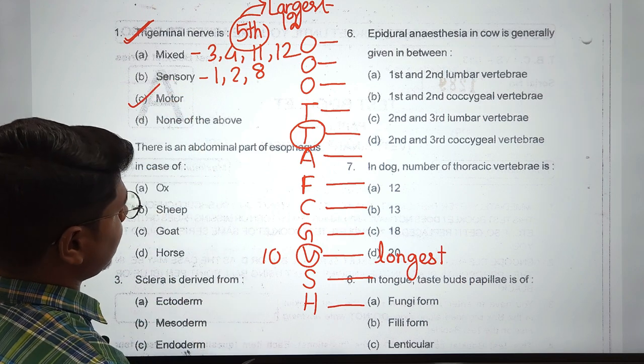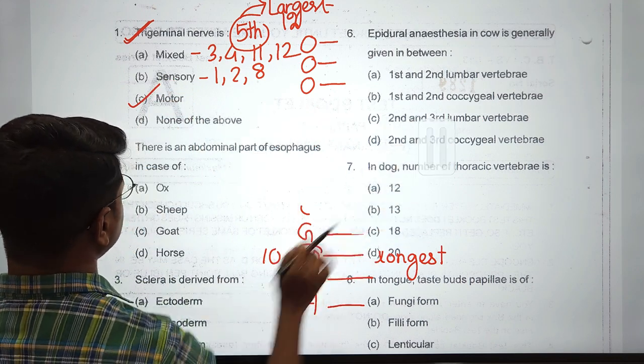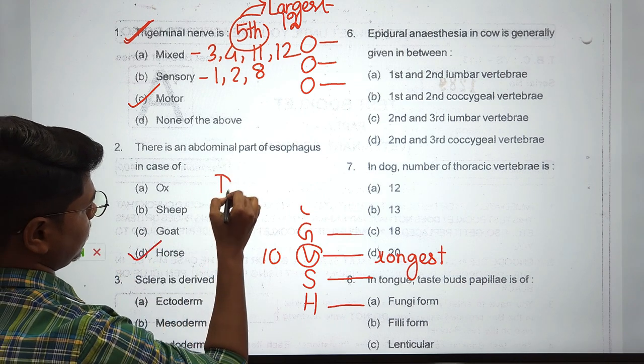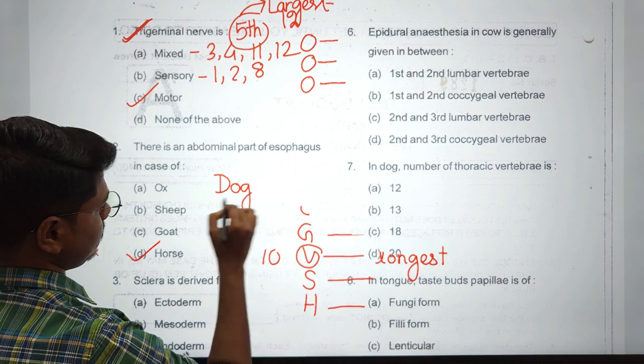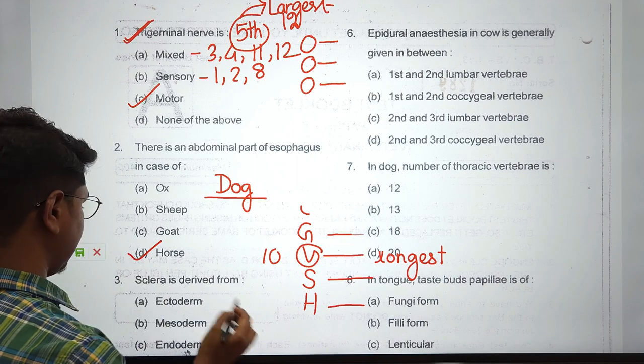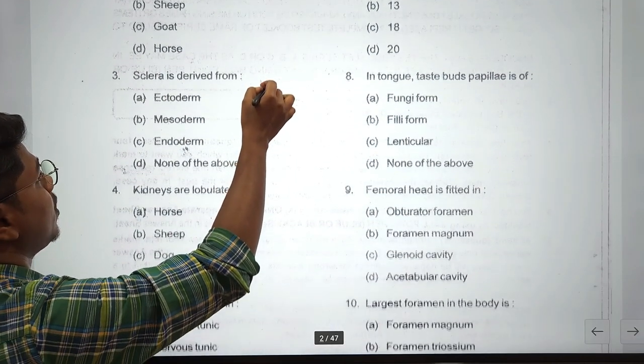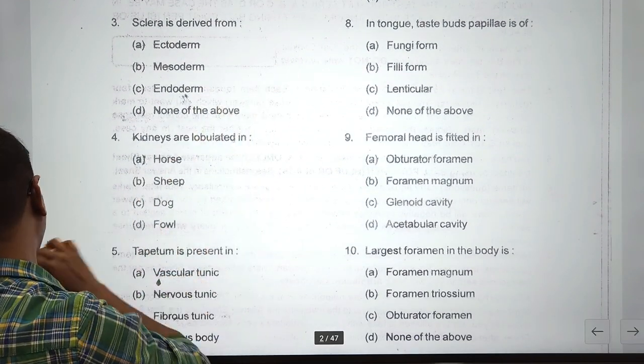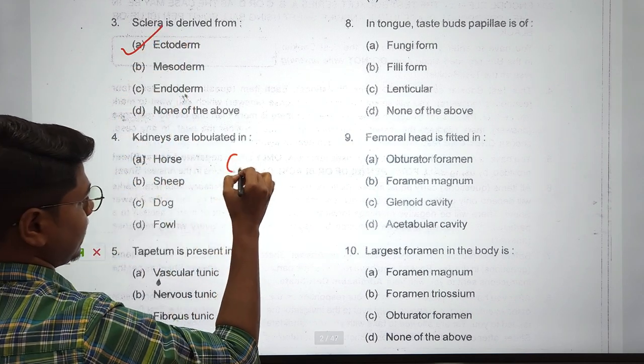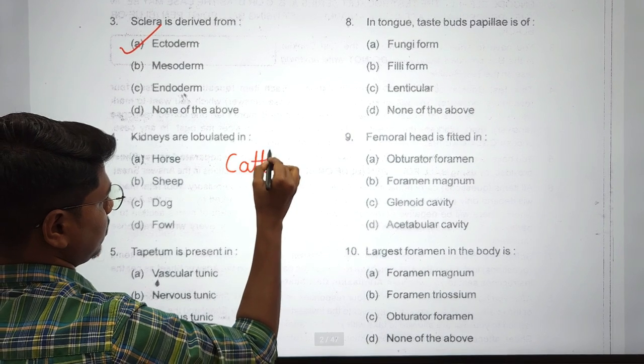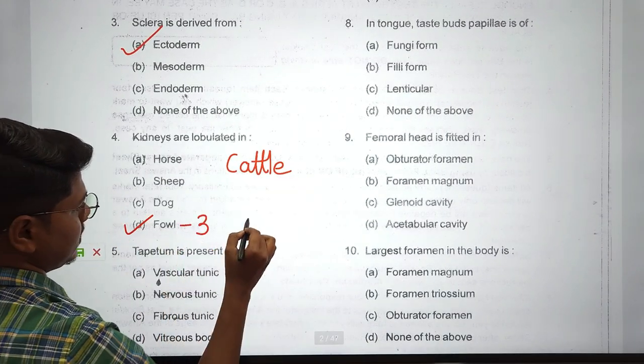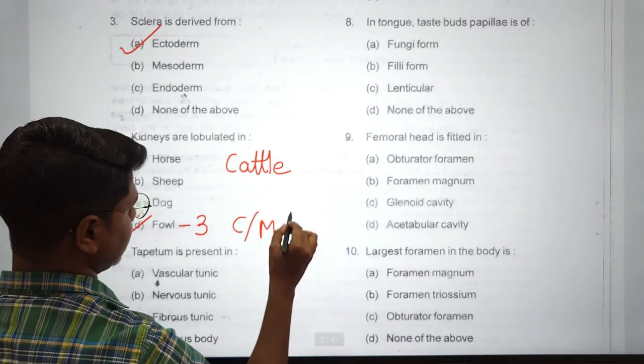There is an abdominal part of esophagus in case of horse and also in dog, but the part is very small compared to horse. Next question: sclera is derived from neuroectoderm. Kidneys are lobulated in case of cattle and also in fowl. The answer is fowl - in fowl it has three lobes: cranial, middle, and caudal lobe.